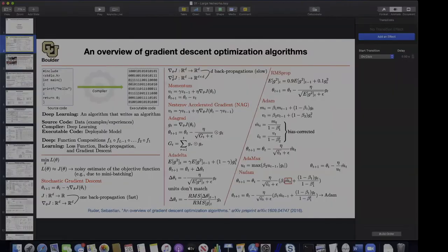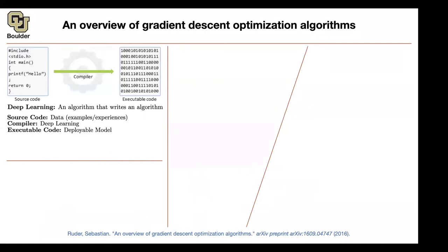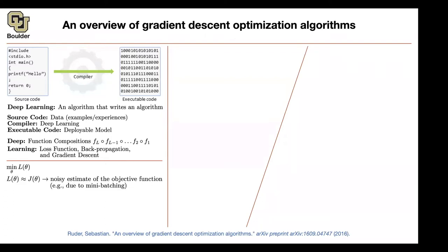Last time we talked about deep learning, the big picture. Then we talked about stochastic gradient descent.